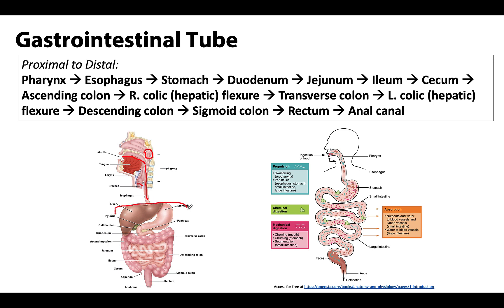Let's draw in where the diaphragm would be. The esophagus is going to traverse the diaphragm at the esophageal hiatus. Then you're going to have a relatively short portion of the esophagus that is actually in the abdomen — that's called the abdominal part of the esophagus — and it will transition into the stomach right around the cardiac region.